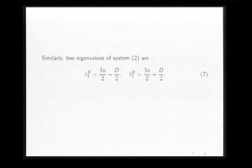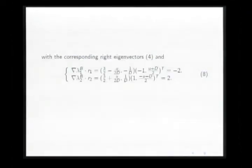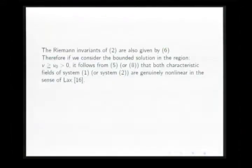Similar eigenvalues for the second system are these. This is similar for the second system. And calculating this internal scalar product, in this case this product is minus two. In this case it's two.